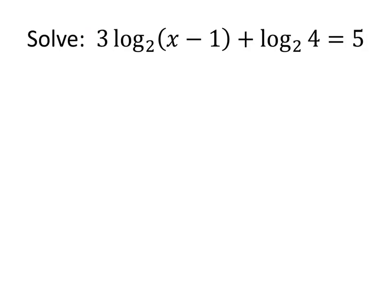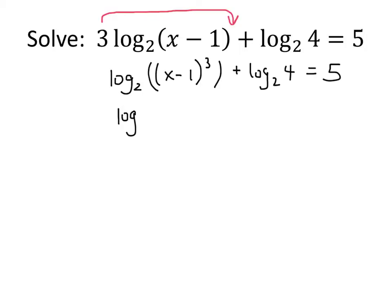So the first thing we have to do here is take care of that 3 using the rule that says that a number times a logarithm, we can bring that number up and write it as a power. So using that log rule, we can rewrite this as the log base 2 of x minus 1 cubed plus the log base 2 of 4 equals 5. Now we have two logs added together, so now we can use the other log rule that says that the sum of two logarithms is the logarithm of the product.